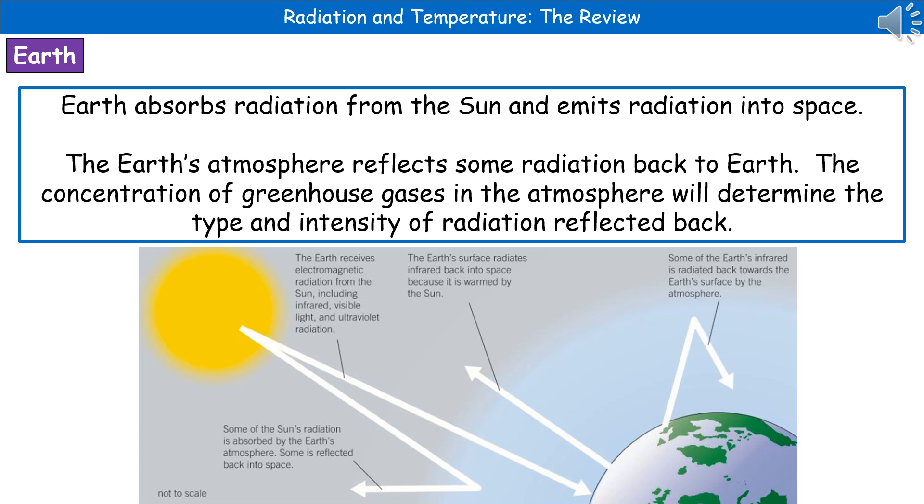Hopefully at the end of this review, you can now explain how the intensity and wavelength distribution of radiation emitted by an object depends on its temperature. You can explain the relationship between the temperature of an object and the radiation that it emits and absorbs, and you can explain why the temperature of the Earth or other objects does or does not change using that knowledge.